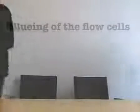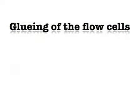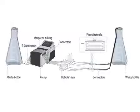Should we do that now? Yeah, sure, let's do that. Gluing of the flow cells. The flow cells are located between the bubble trap and the waste bottle.